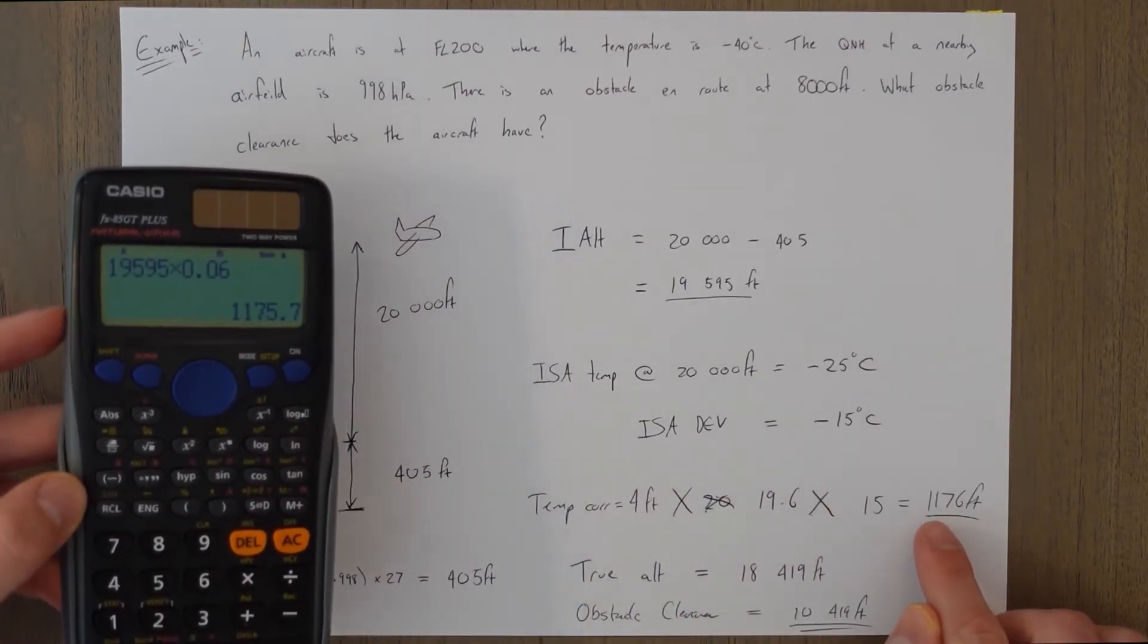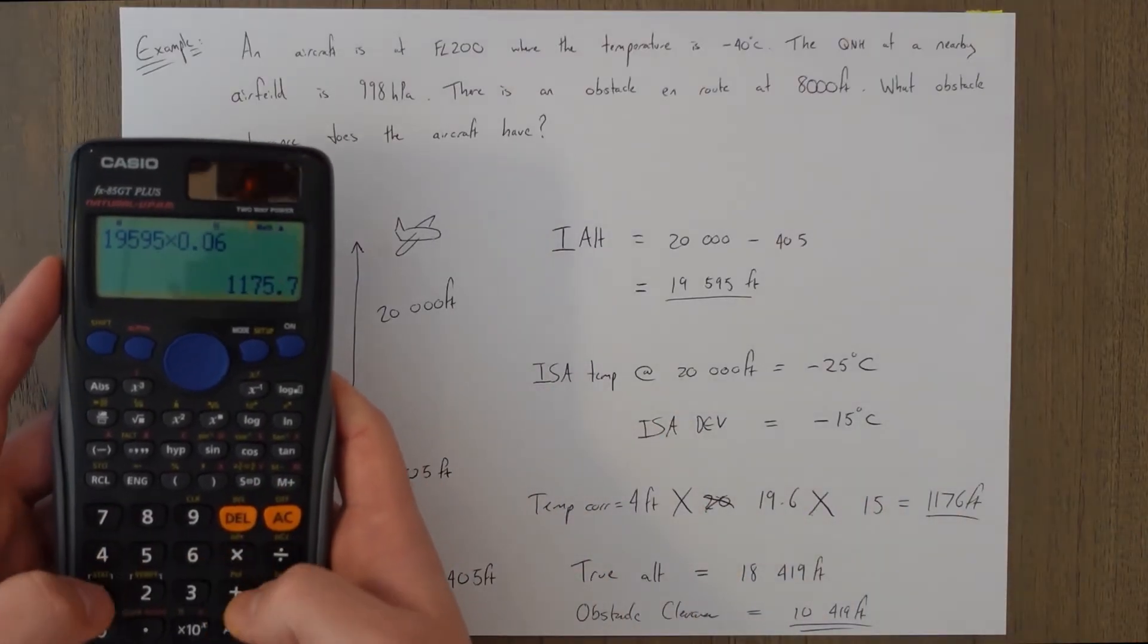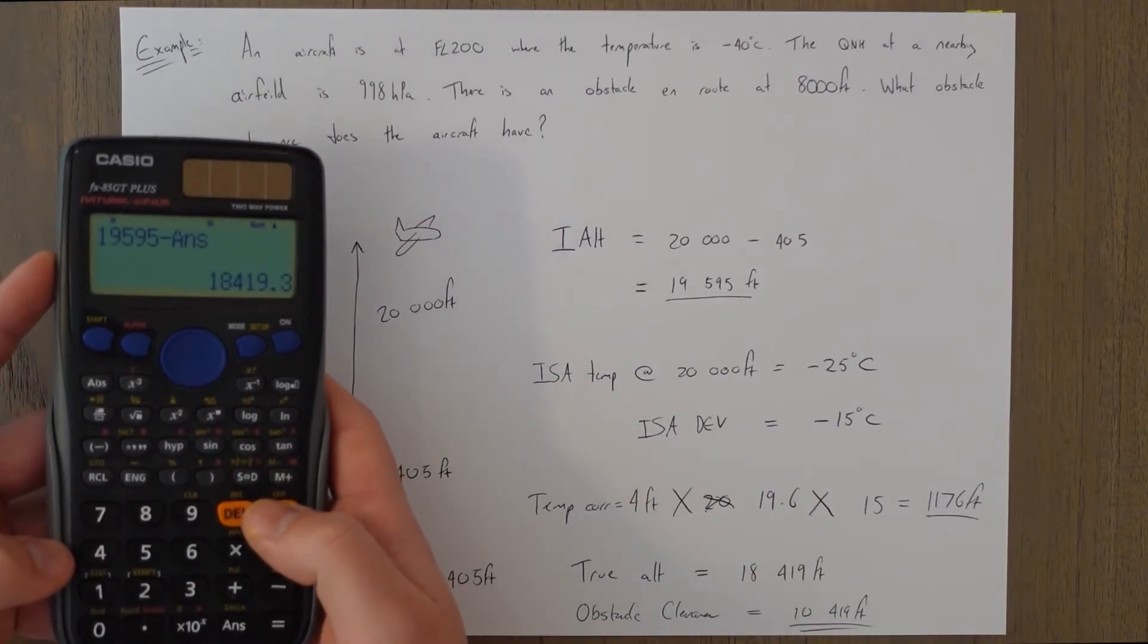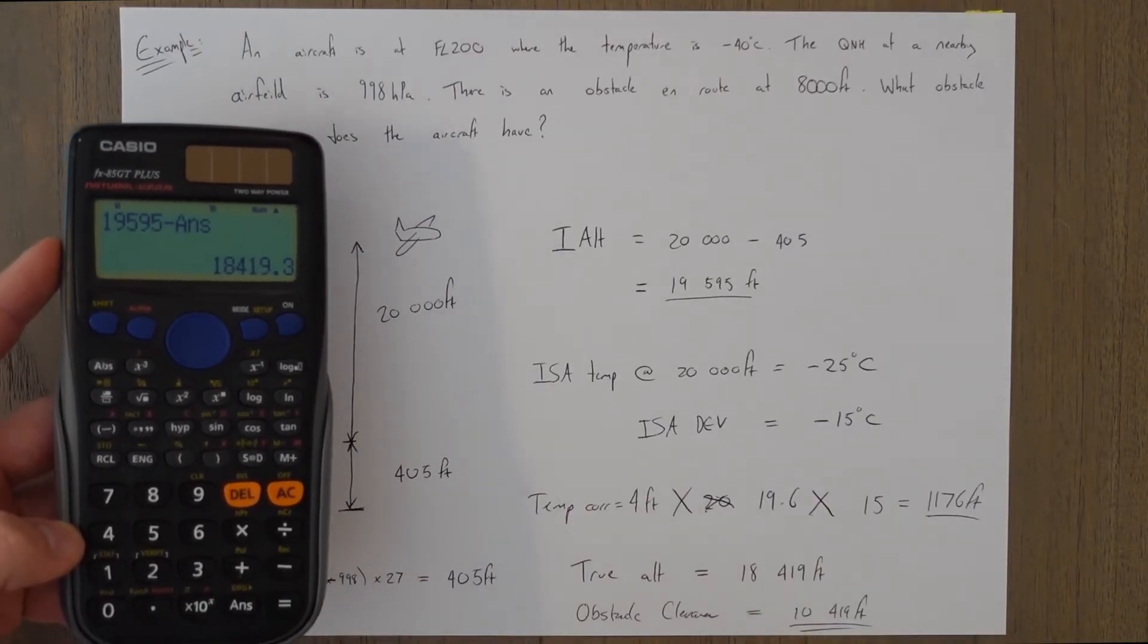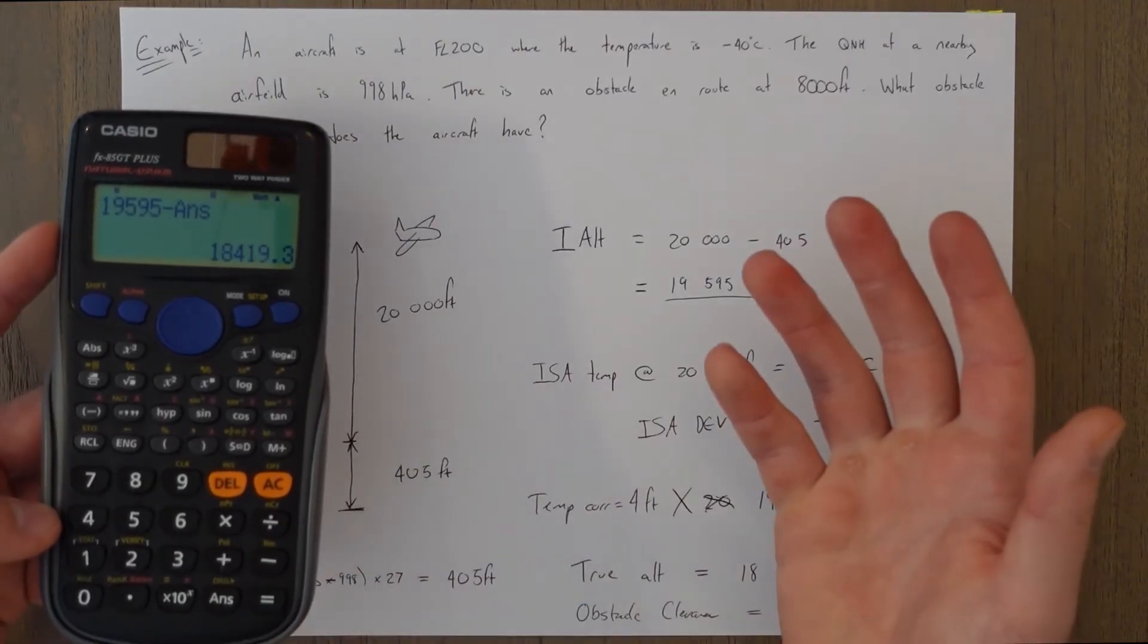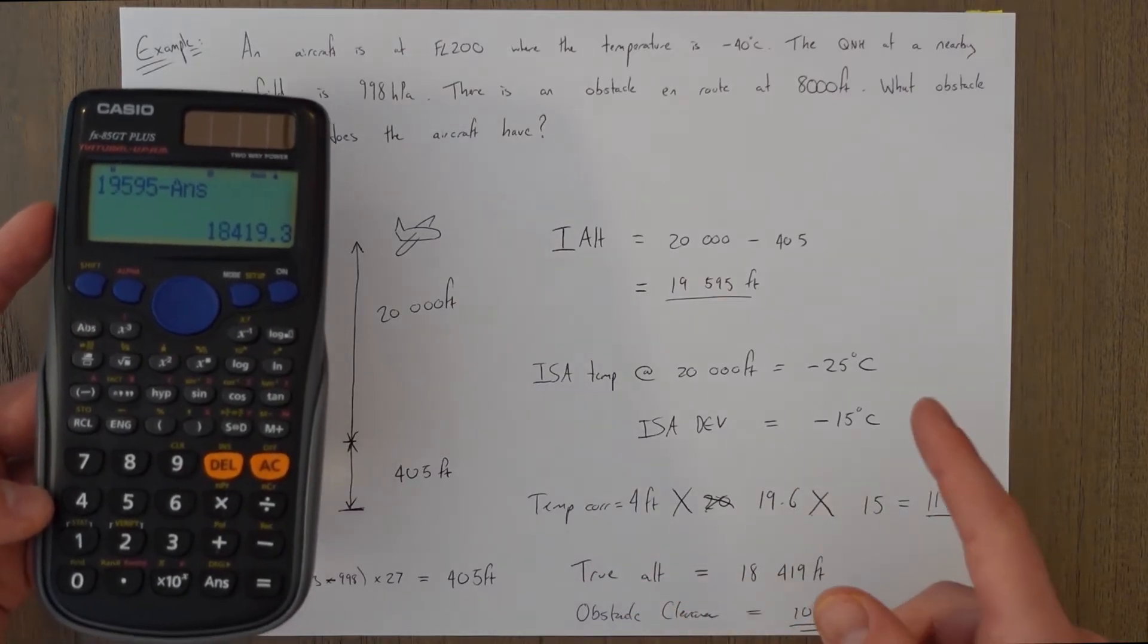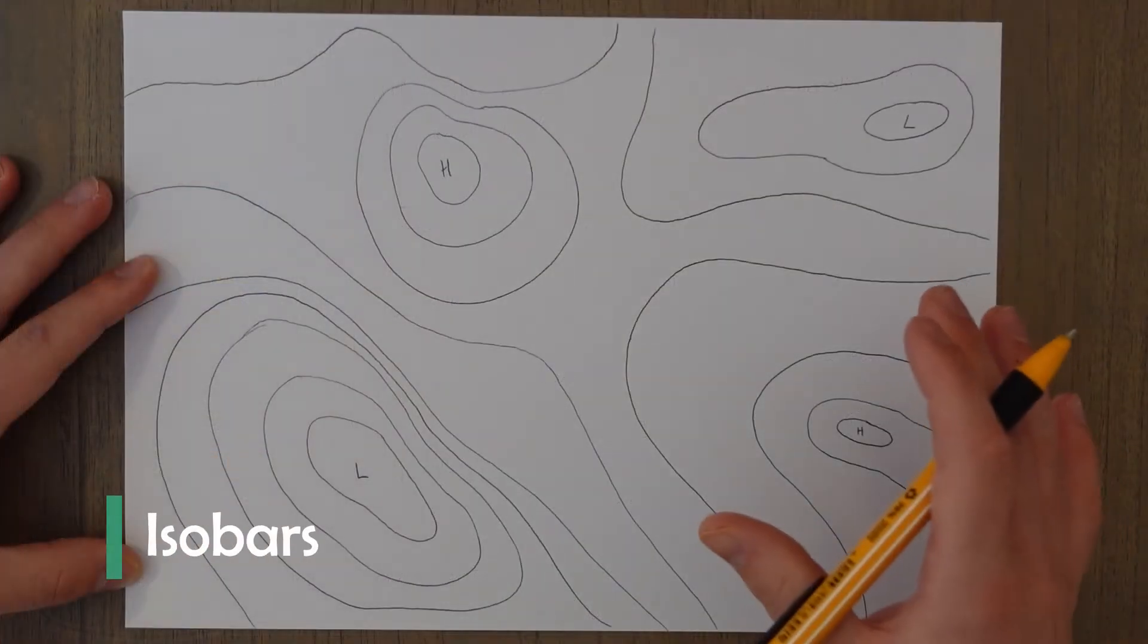And the actual difference is 1176, so it's really really close, it's really quite a good estimation. And then we would take that from the 19,595 and that is our answer in here, and then you do this obstacle clearance the same way. So the one percent per 2.5 degrees is just as good, if not maybe a bit quicker than the temperature correction of four feet per thousand feet per degree of ISA deviation.